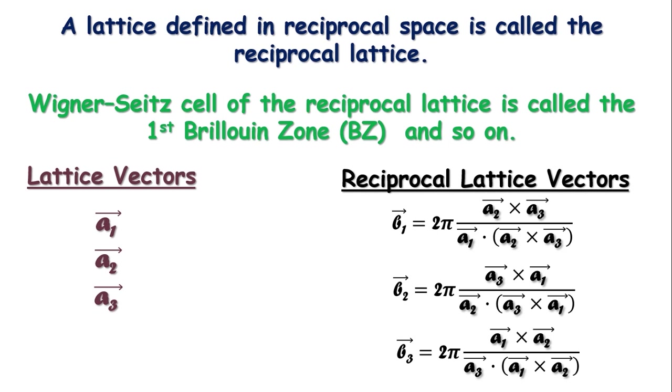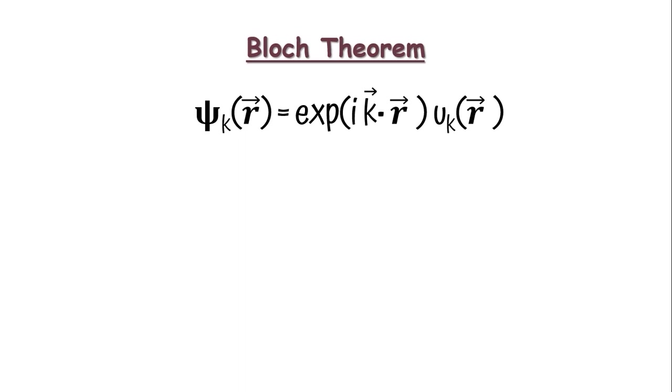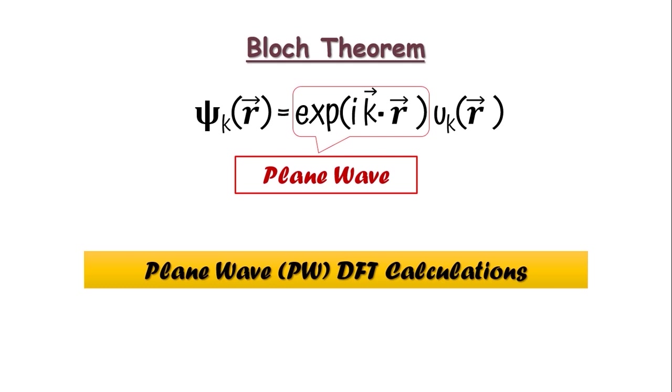Now, you may remember that we had started this discussion with the equation psi k of r equals to e to the power i k dot r into u k of r plus r n. This is the Bloch function. Since e to the power i k dot r is an equation of a plane wave, these calculations that we are going to perform are called plane wave DFT calculations or simply PWDFT calculations. Now, this is just a class of DFT calculations and of course the most popular class of DFT calculations.